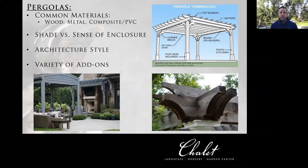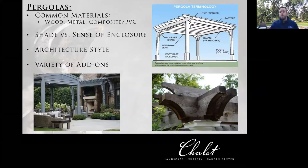The top runners are also known as purlins — you may hear that term when talking with someone about pergolas. Those purlins are a nice finishing touch along the top. All of these things can be spaced differently — tighter together for more shade or more physical presence, or spaced apart and very minimal in construction, which is more for just an aesthetic look rather than defining a space or providing shade.